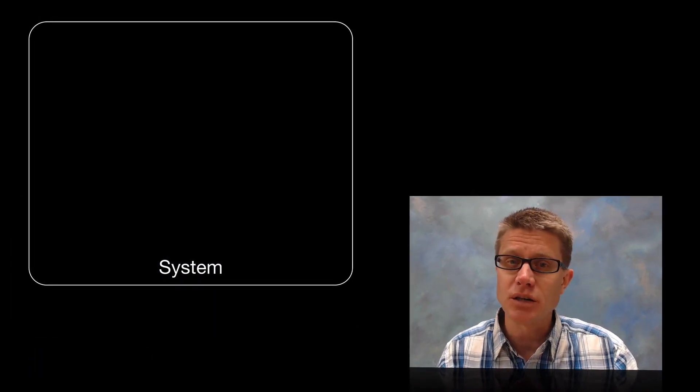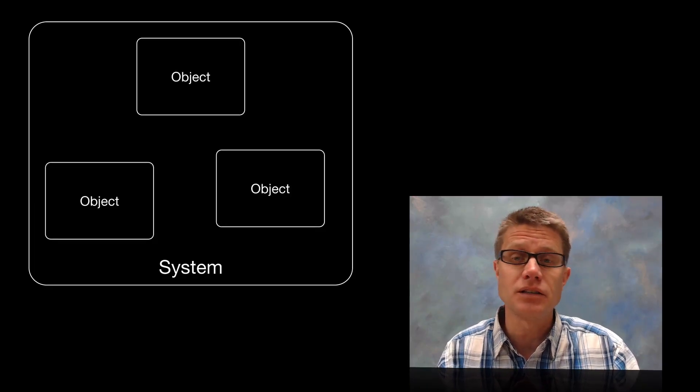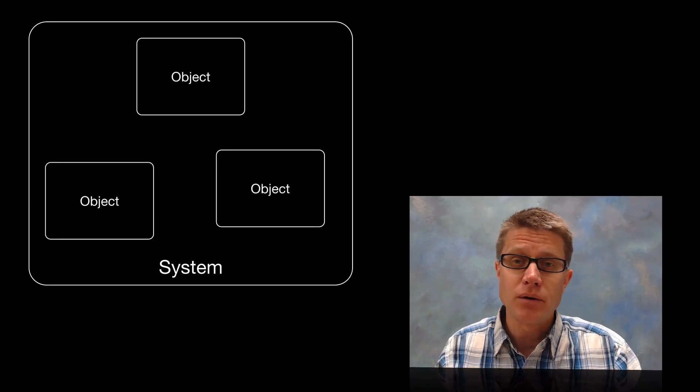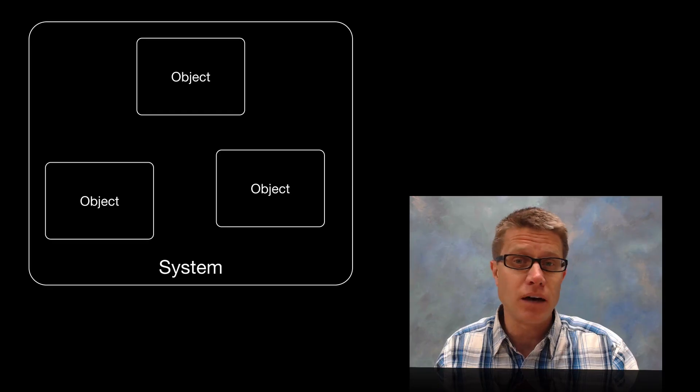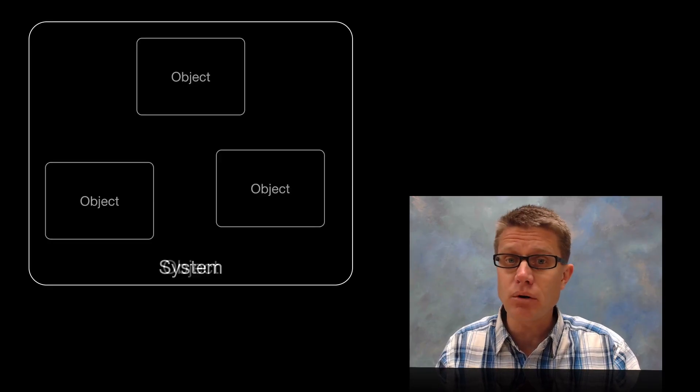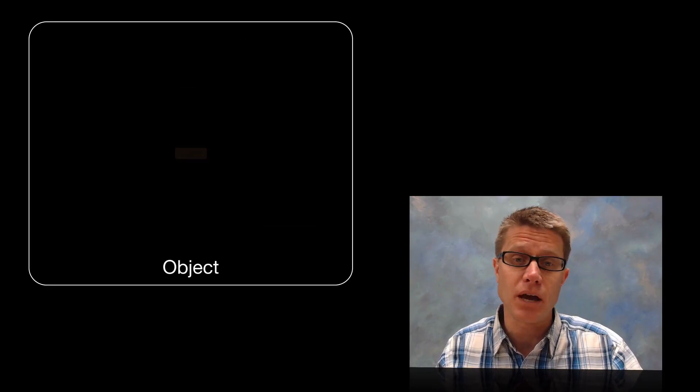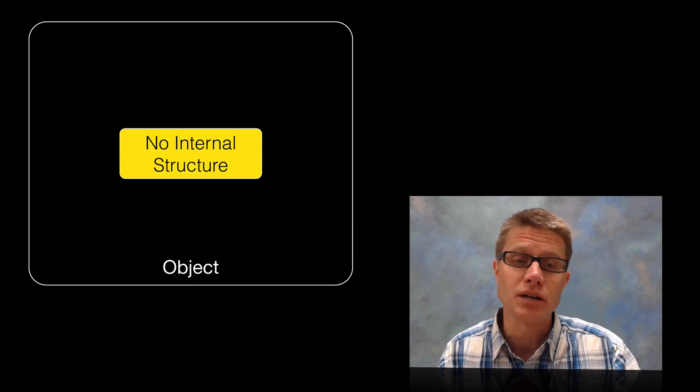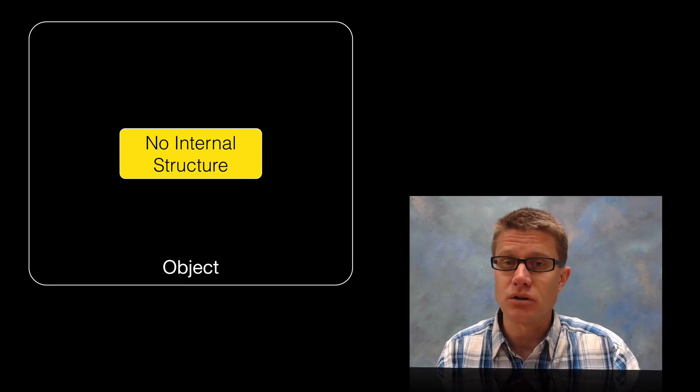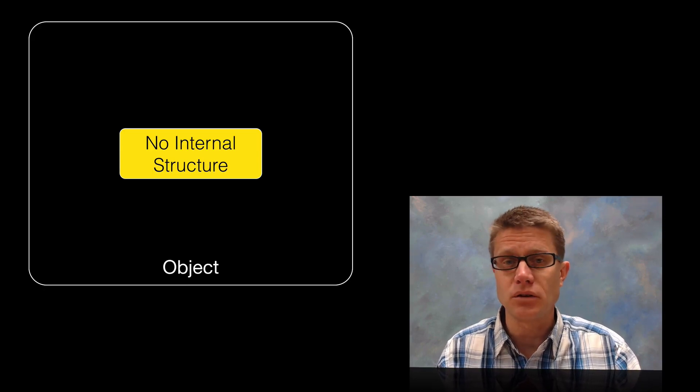And so a system is made up of two or more objects that are connected together in some way. Now if the internal structure of that overall system is not important, we can just treat that whole system as an object. And so what is an object? It is anything that has no internal structure or no relevant internal structure.